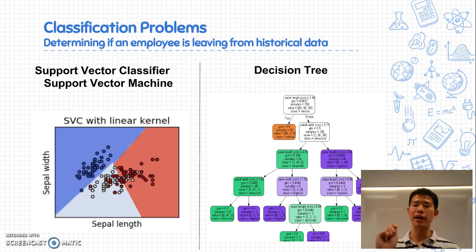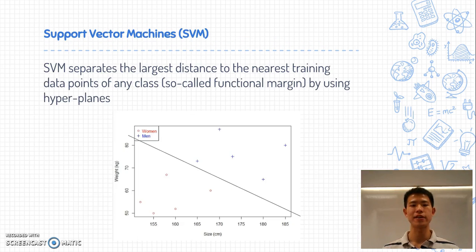There are two models that you can do in order to help you with classification. First of all, it's the support vector machine or the simpler version support vector classifier. And second is decision tree. For the support vector machine and decision tree, I'm going to explain to you because these are going to be the interesting and important points for our model generation. So what is SVM? SVM separates the largest distance to the nearest training data points of any class by using hyperplanes.